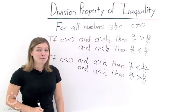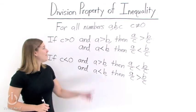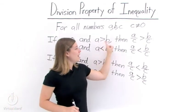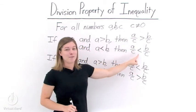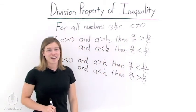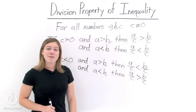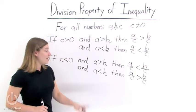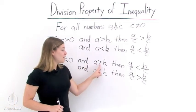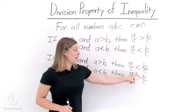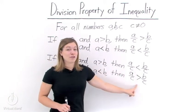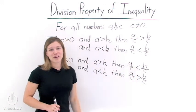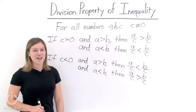So, the division property of inequality states that if c is greater than 0, we do not need to flip over our inequality symbol in order to preserve the inequality when we divide by c on both the left and right-hand sides. But when c is a negative number, we must flip over our inequality symbol in order to preserve the inequality when we divide by c on both the left and right-hand sides of our inequality.